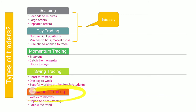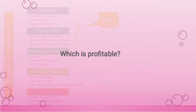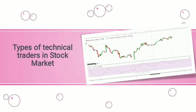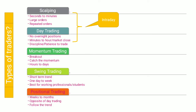The next type is a positional trader. These people wait for weeks to months — it could be one month, two months, ten months, or twelve months — depending on their risk appetite. They enter based on the trend: if there is an uptrend they enter accordingly, and if there is a downtrend they act accordingly. Positional trading is the exact opposite of day trading — instead of earning profit on the same day, they wait for a specific time to enter and exit.